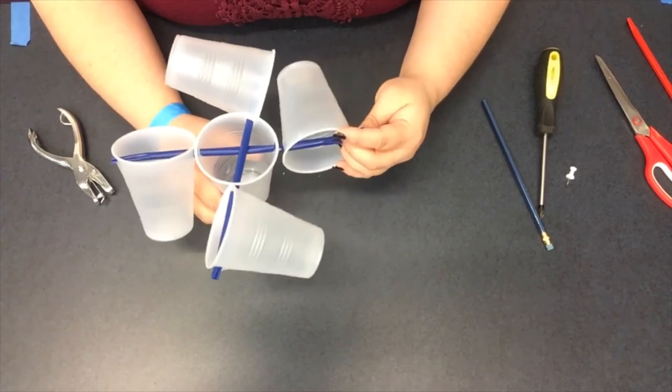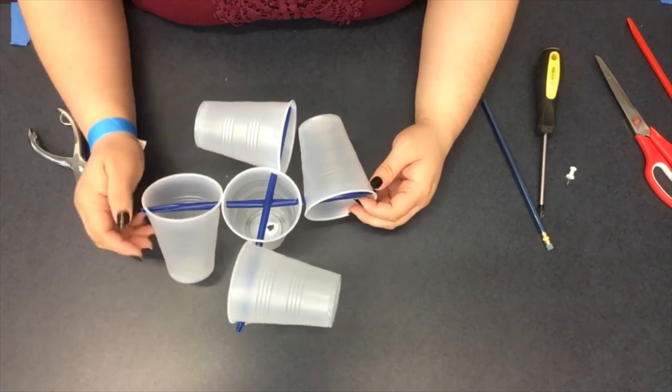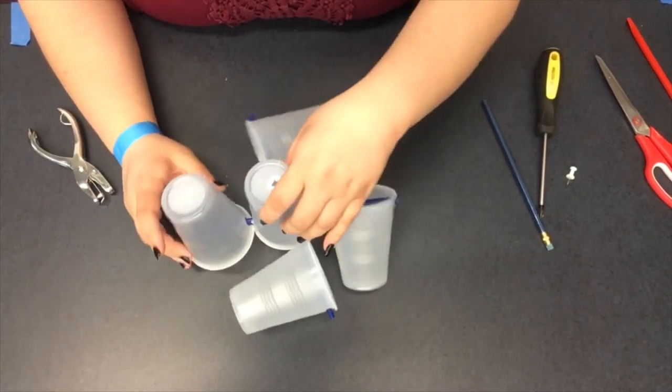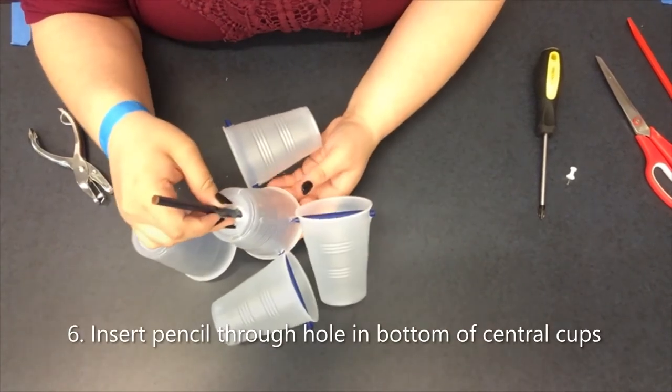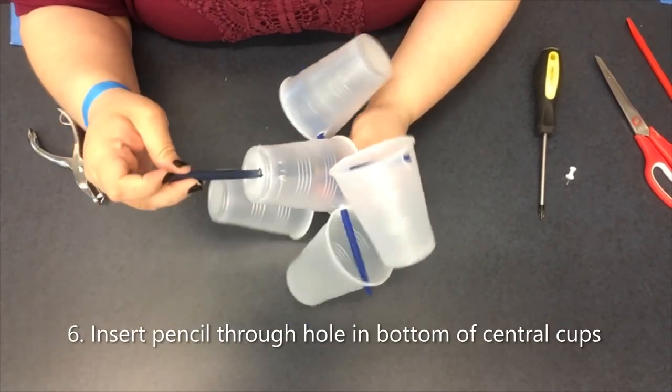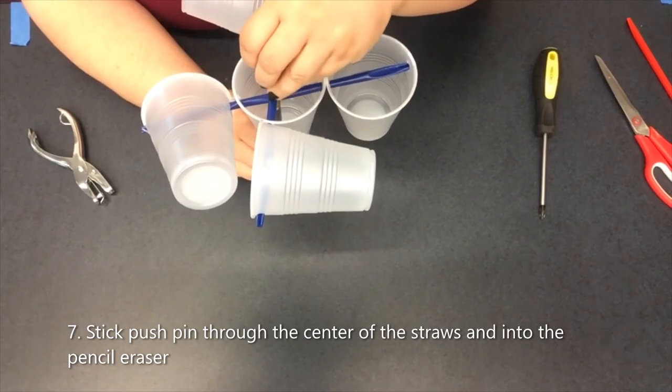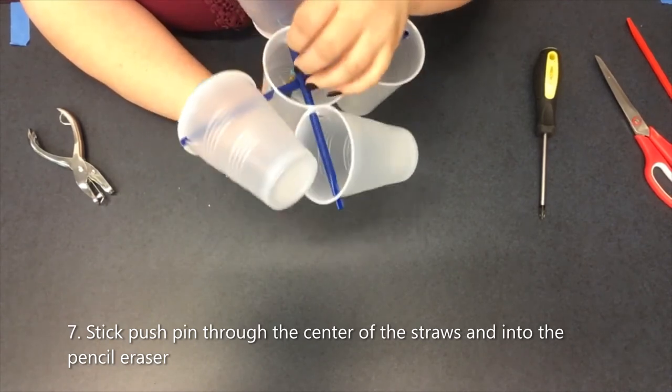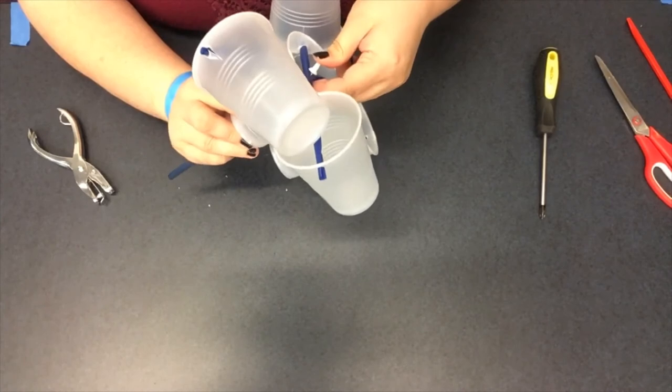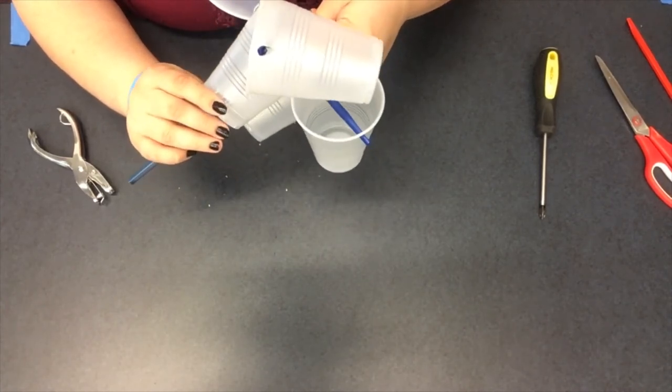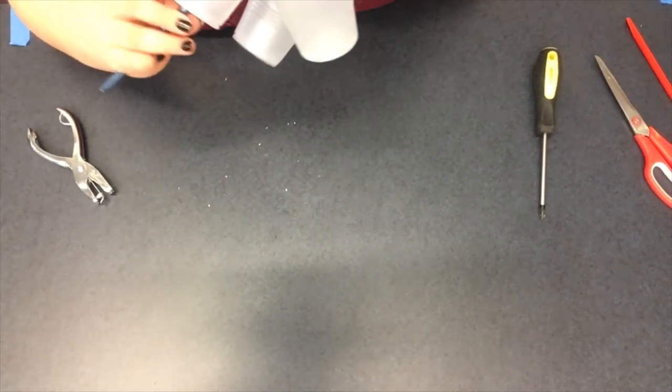So now you can see that all four cups are attached. And what you're going to want to do is flip it over and take your pencil and put it through the middle and that hole that you made. And flip it back over so it's right side up. And take your push pin and stick it through both of your straws so that it sticks right into the eraser of your pencil.